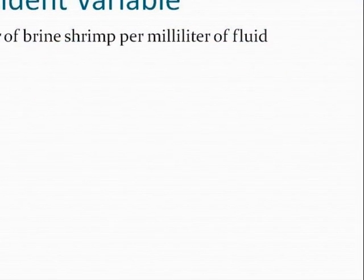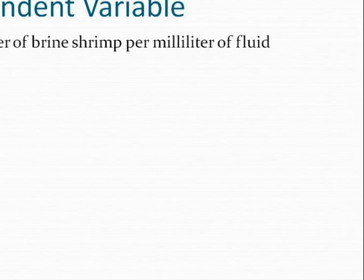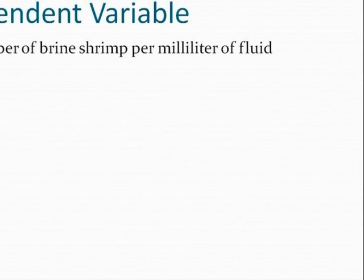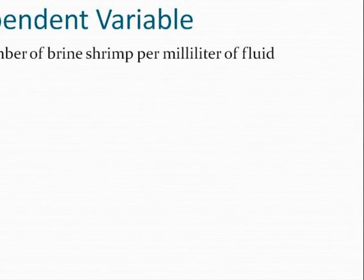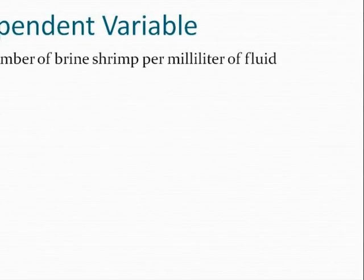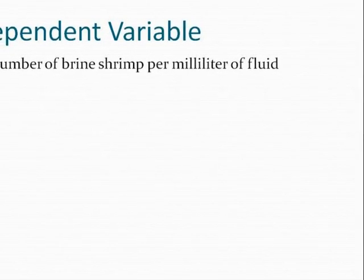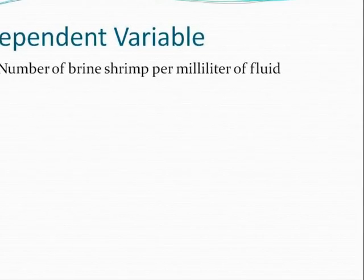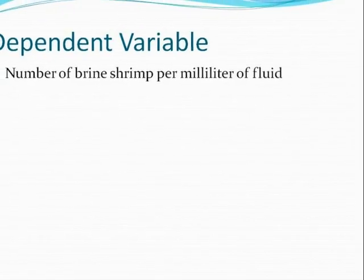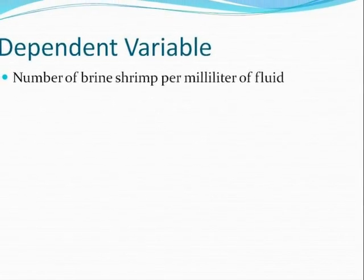The effect of the independent variable is called the dependent variable. The dependent variable will be the number of brine shrimp per milliliter of fluid.